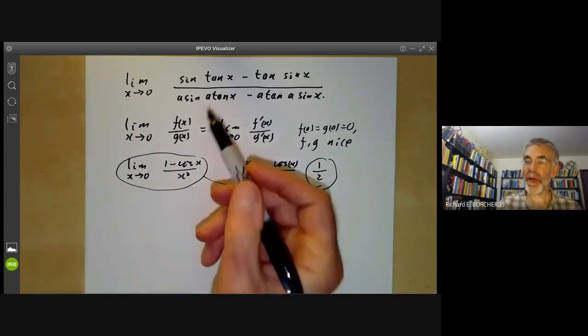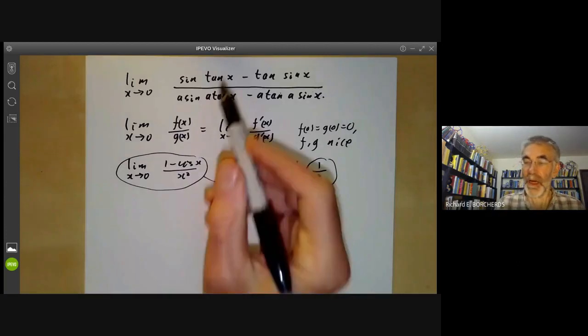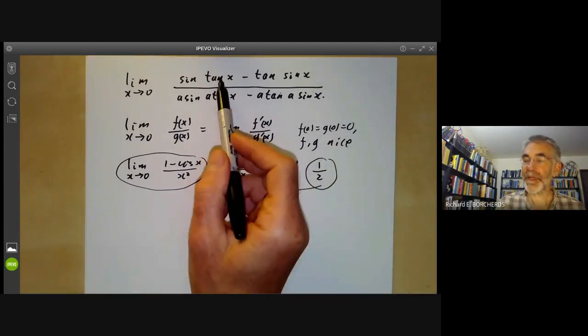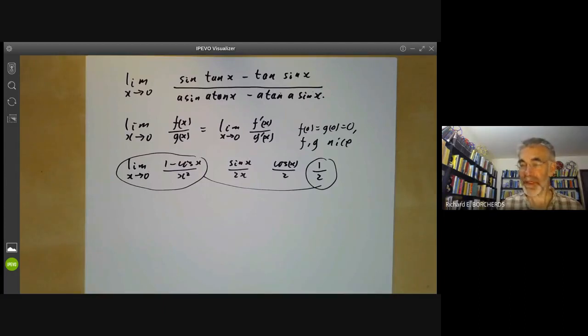So why don't we just apply this rule to this expression here? Why doesn't it work? Well, the answer is it does work, but there's a bit of a catch. The catch is that instead of differentiating this expression once or twice, you have to differentiate it seven times.